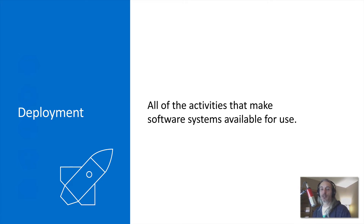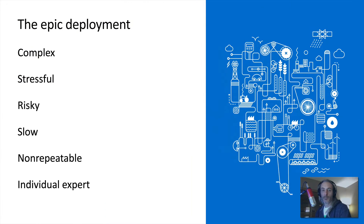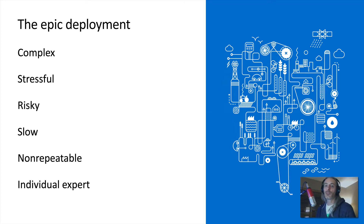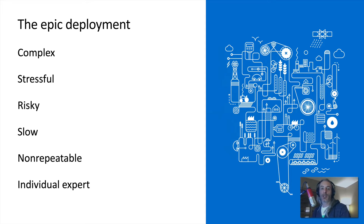Now that we've normalized what deployment means, let's look at some typical deployment scenarios. One I like to point out is what's called in many cases the 'epic deployment.' The name comes from Jez Humble's book 'Continuous Delivery: Reliable Software Releases Through Build, Test, and Deployment Automation' — a fantastic book you should check out.